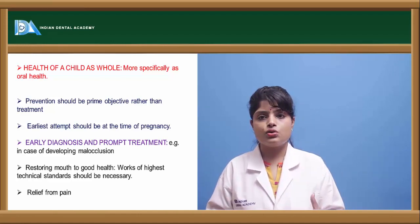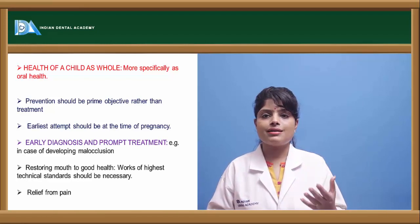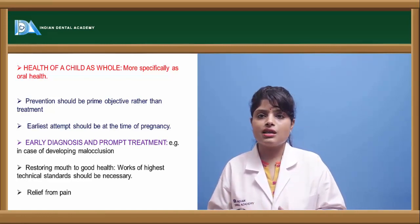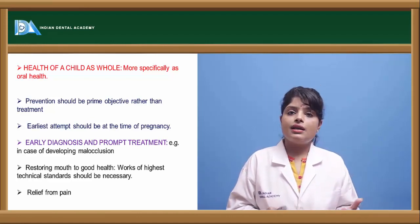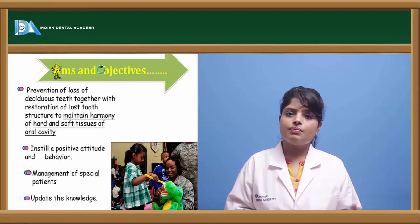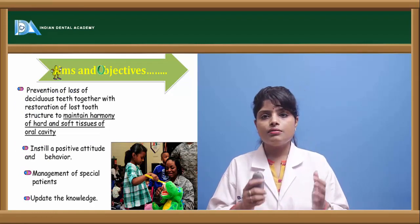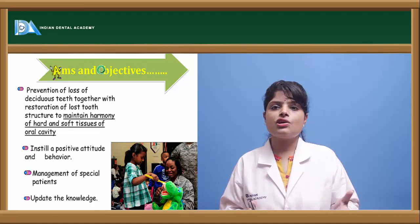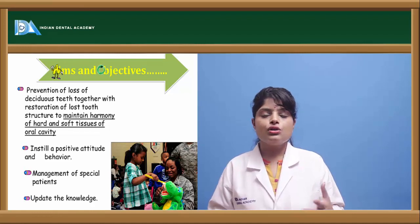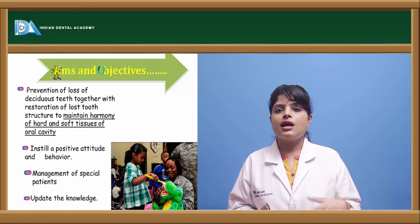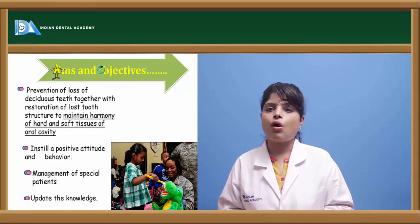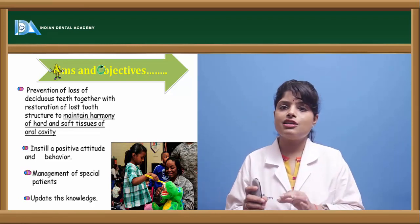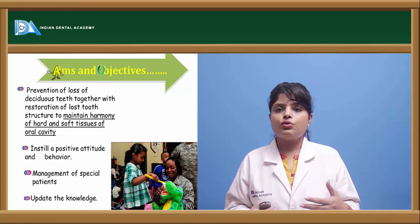Restoring the mouth to proper health — for example, treating caries or deep pits and fissures — should be done to maintain a harmonious relationship of the maxillary and mandibular arch. If any tooth is lost, replacement by a space maintainer or other prosthesis should be done. If a tooth is causing pain, it should be relieved by pulp therapeutic procedures. The pedodontist should always update their knowledge, incorporating new upcoming strategies for the betterment of the patient.